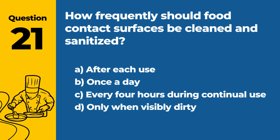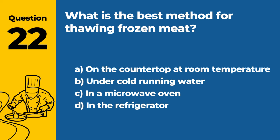Question 21: How frequently should food contact surfaces be cleaned and sanitized? A. After each use. B. Once a day. C. Every four hours during continual use. D. Only when visibly dirty. Answer: A. After each use. Food contact surfaces should be cleaned and sanitized after each use to prevent cross-contamination.